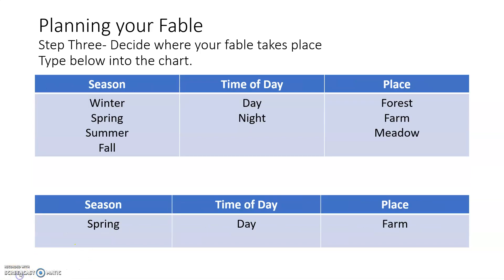The second slide that you're going to see in Seesaw today is where you're going to think about planning where your story takes place. Remember, when we are thinking about the setting, we're thinking about the season, the time of day, and the place. So I wrote down the seasons: winter, spring, summer, and fall. Then I put down the time of day — day and night — and then some places, like a forest, a farm, or a meadow.